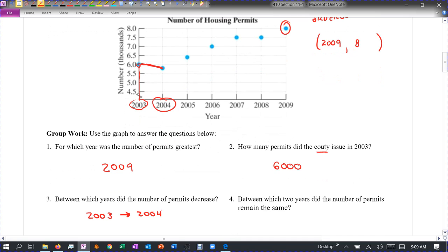Between which two years did the number of permits remain the same? And you can see between 2007 and 2008, they remain the same.